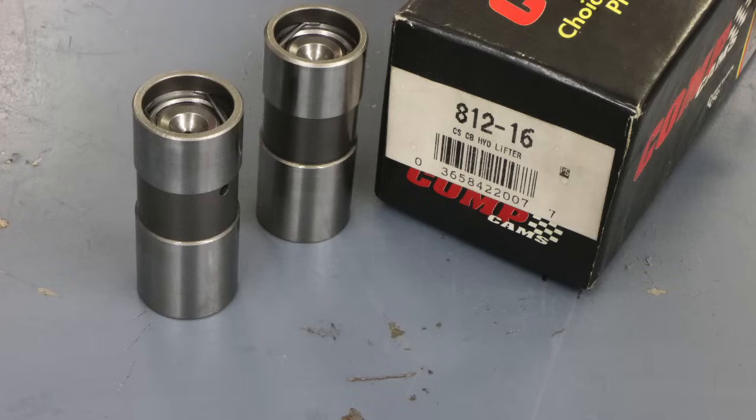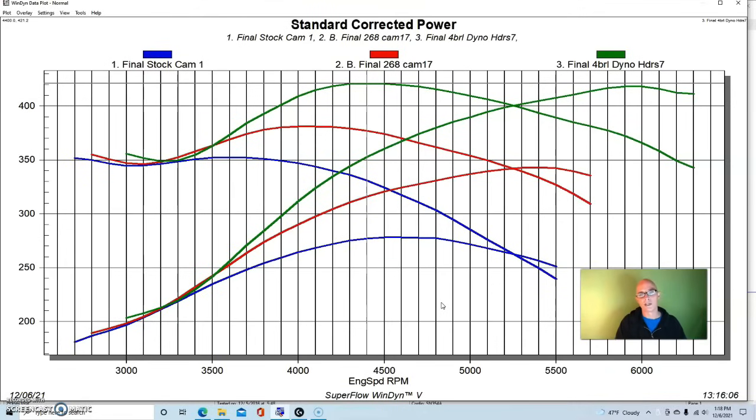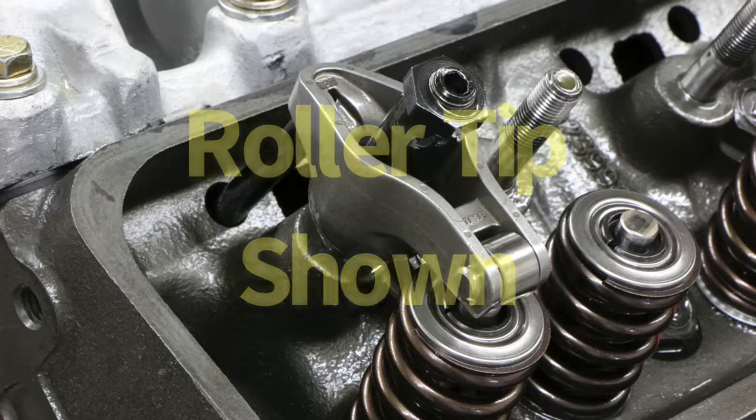They were not short travel lifters, it was just a standard travel Comp hydraulic flat tappet. The other thing we did add to this combination, which the rules wouldn't allow, we were just running this on the dyno, but to make this kind of power we also incorporated a roller rocker, which was a